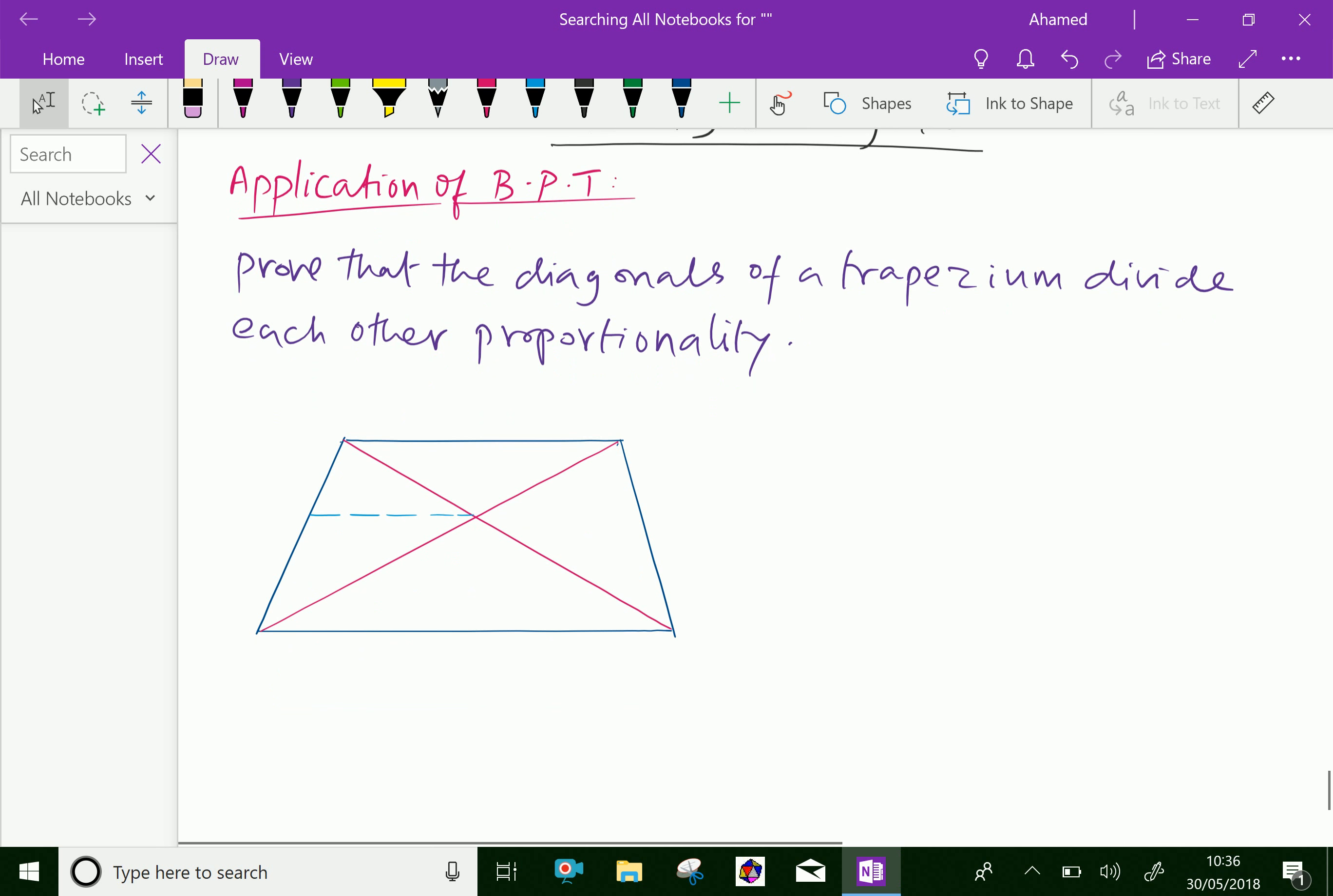The figure trapezium is given. ABCD is a trapezium given in which BD and AC are diagonals and let them intersect at E.